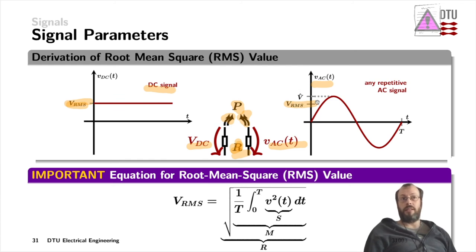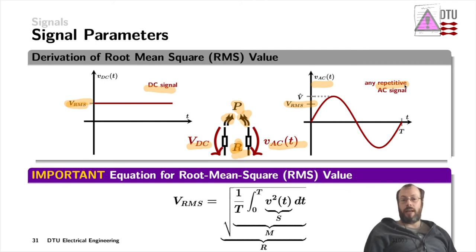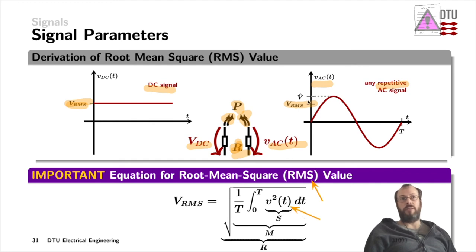How do you calculate the RMS value? You start from the back — starting with the square first. The square is the inner function applied first: you take the signal V as a function of t, square the mathematical description of the function, and do the math on that. Once you've done that, you move on to the mean value. The mean is an integration across the signal from zero to its period T, integrating over the time variable t.